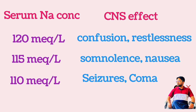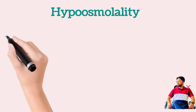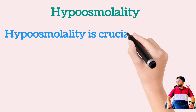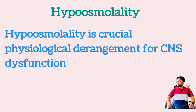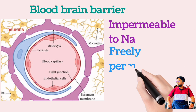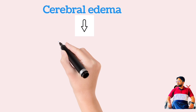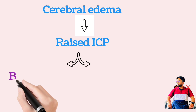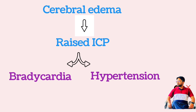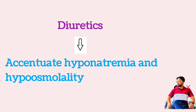VT may occur at a serum sodium concentration of 110 mEq per litre. Normal serum osmolality is 290 mOsm per kg; when it decreases, it is called hyposmolality. Hyposmolality rather than hyponatremia appears to be the crucial physiological derangement leading to CNS dysfunction in TURP syndrome, as sodium is impermeable to the blood-brain barrier but water is freely permeable. Thus, cerebral edema caused by acute hyposmolality can result in increased intracranial pressure with resultant bradycardia and hypertension. Diuretics administered to treat hypervolemia during TURP may accentuate the hyponatremia and hyposmolality.